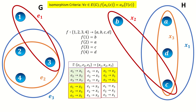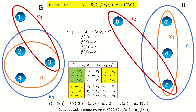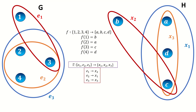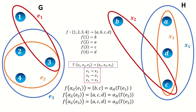To demonstrate: the choice of Gamma highlighted in green that takes E sub 1 to X sub 1 is a bijection, but F of alpha sub G of E sub 1 is the set containing B and C, which is not the same as alpha sub H of Gamma of E sub 1, which is the set containing A, C, and D. On the other hand, if we choose one of the mappings highlighted in yellow, our function does satisfy the property in our definition of isomorphism. Since we were able to construct the mappings Gamma and F that meet the criteria, we can say these hypergraphs are isomorphic.